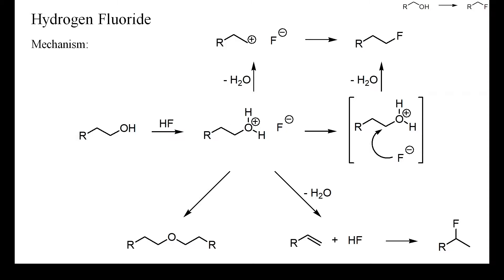The direct deoxyfluorination of alcohols by hydrogen fluoride proceeds by the same mechanism as that of other hydrogen halides. Protonation of the hydroxyl group converts it into a good leaving group that can be substituted by fluoride either by SN2 or by intermediate formation of a carbocation. Typical side reactions are ether formation and elimination. The resulting olefins sometimes add hydrogen fluoride but are usually polymerized. Because fluoride is a very small anion — actually the smallest besides hydride — the electrostatic field on its van der Waals surface is extremely strong, which leads to strong bonds to protons and to solvent molecules, diminishing the reactivity of fluoride as a nucleophile. Eliminations and ether formation are therefore more prevalent in reactions with hydrogen fluoride than with the other hydrogen halides.